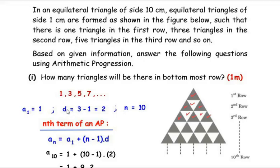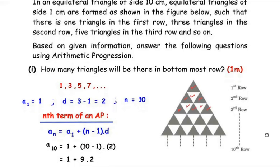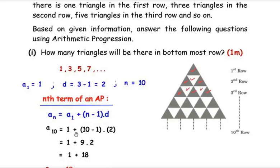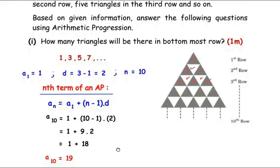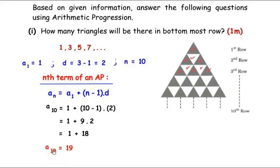The common difference d = second term − first term = 3 − 1 = 2, and since we need the 10th row, n = 10. Using the nth term formula aₙ = a₁ + (n−1)d, we get a₁₀ = 1 + (10−1)×2 = 1 + 9×2 = 1 + 18 = 19. So there are 19 triangles in the bottommost row.